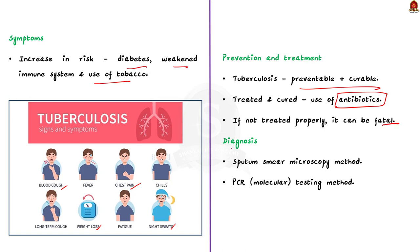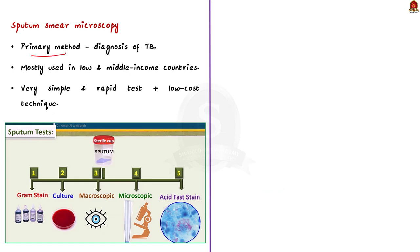There are two popular methods for diagnosis of TB: sputum smear microscopy and PCR molecular testing. The sputum smear microscopy method is the primary method used in low and middle income countries due to its simplicity, speed and low cost. In the test, sputum is collected, spread on a microscope slide, stained with dye, washed in acid solution, then examined under a microscope. If cells retain the stain, Mycobacterium tuberculosis is present, because TB bacteria are acid-fast.